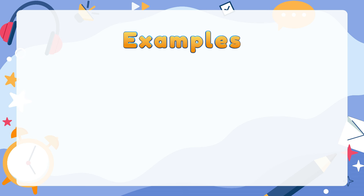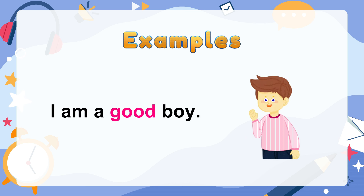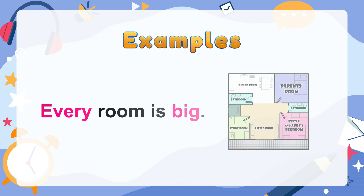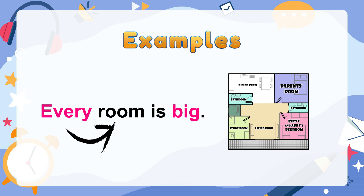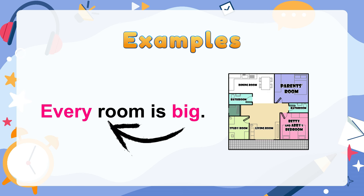Let's take a look at some examples. 'I am a good boy.' Good is the adjective. It describes the boy. 'Every room is big.' Every is an adjective. It describes the room. Big is also an adjective. It describes each room.